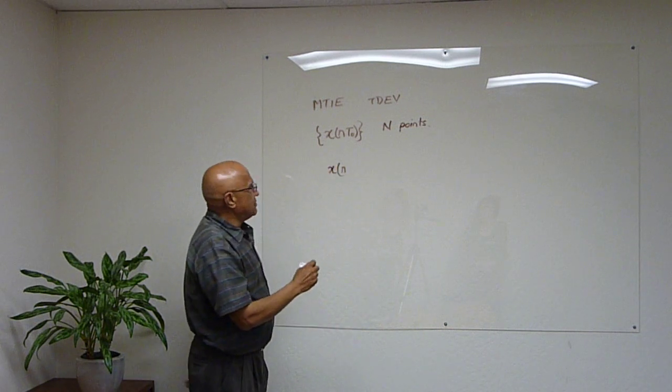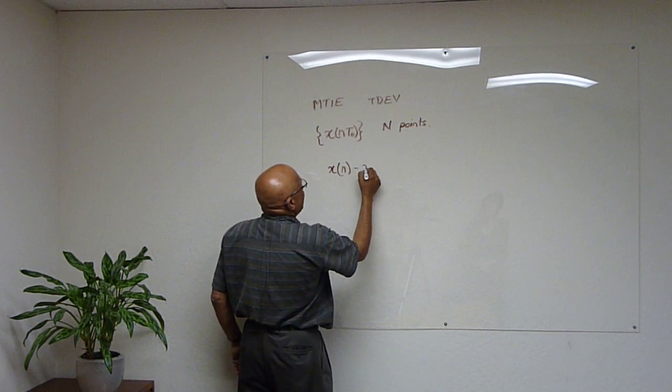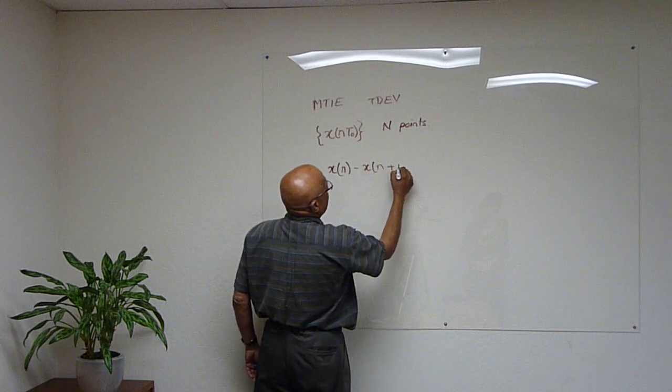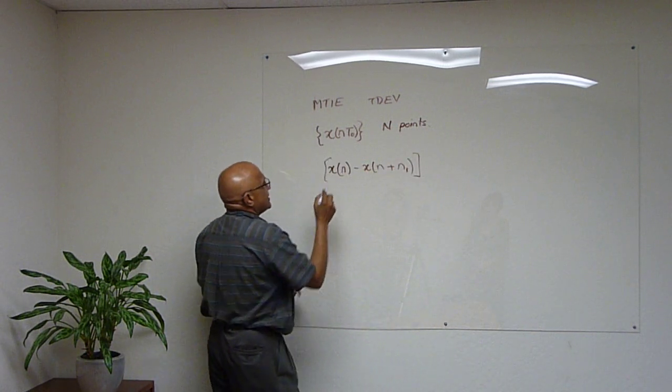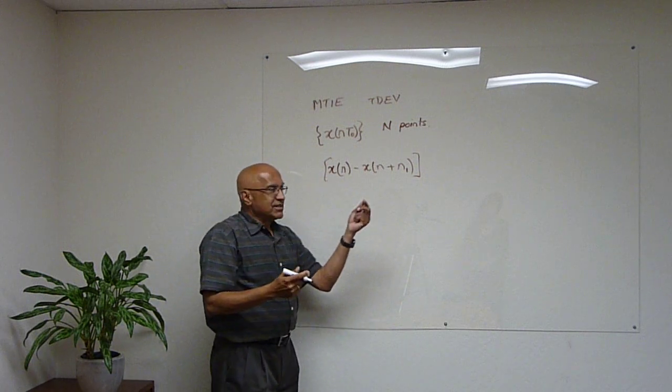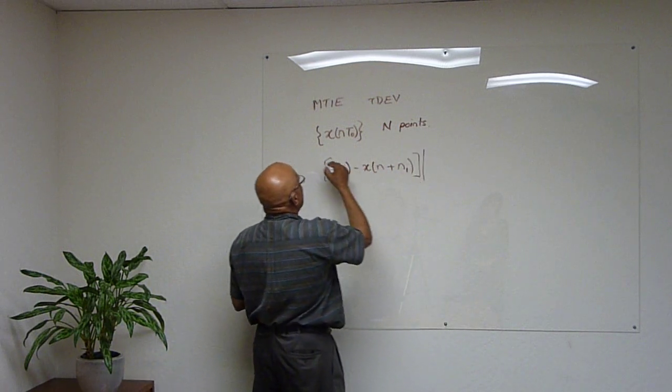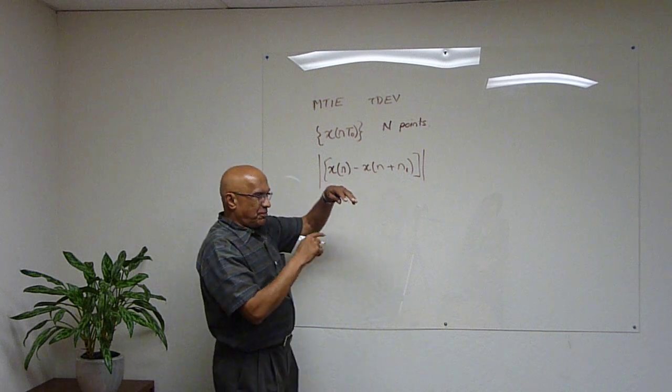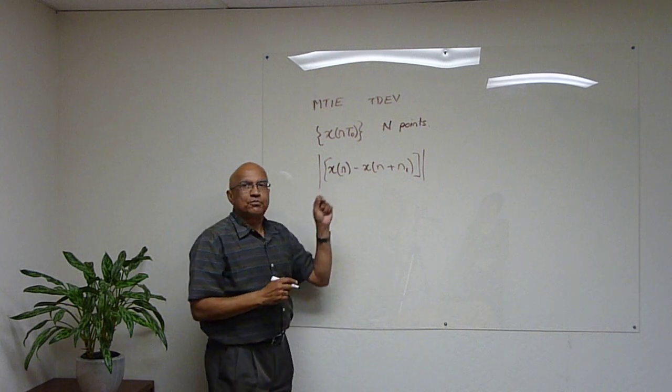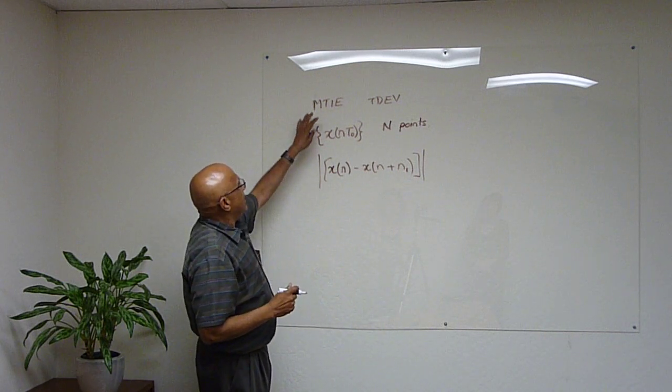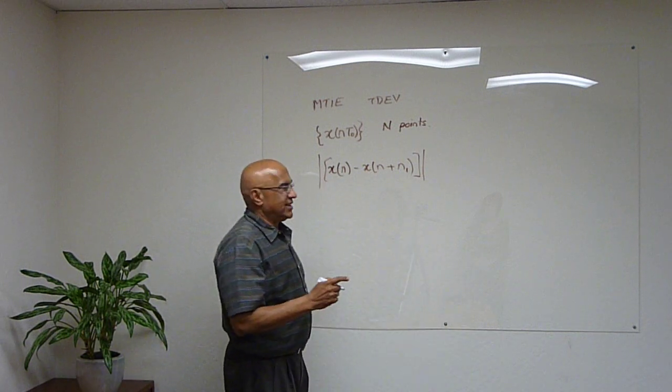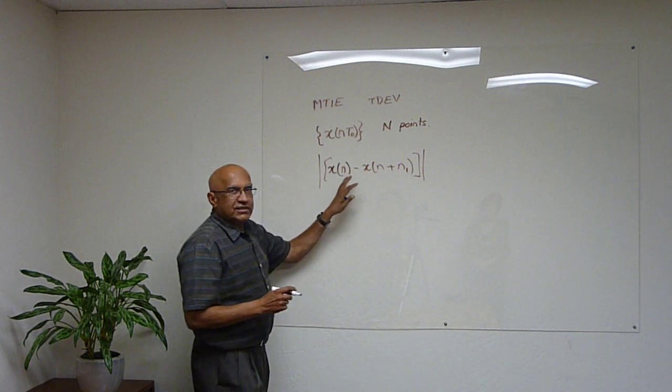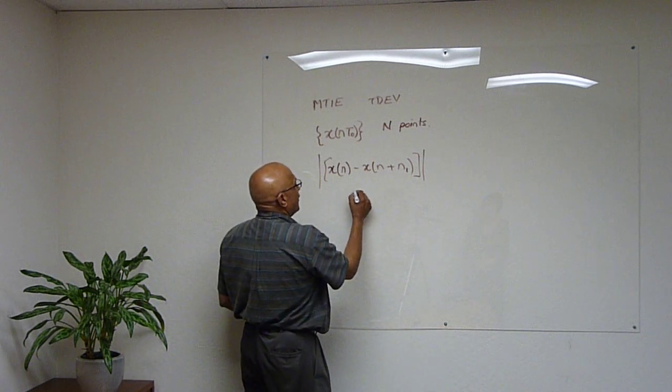some other quantity. This is a time difference. If you look at the absolute value, it tells you what is the peak difference between these two points. The whole idea of MTI is to figure out what is the worst case of this difference for different values of N1.